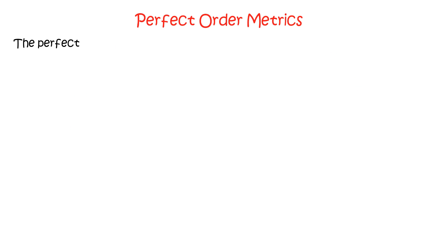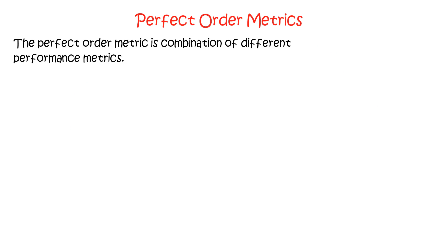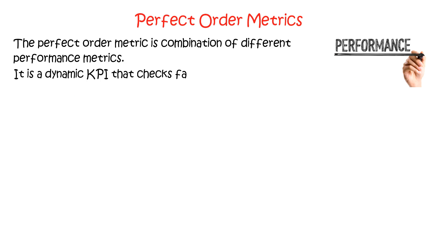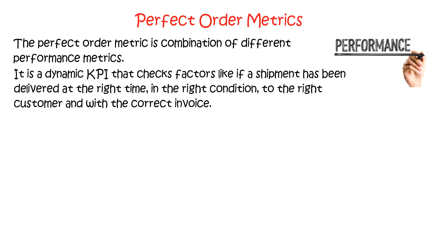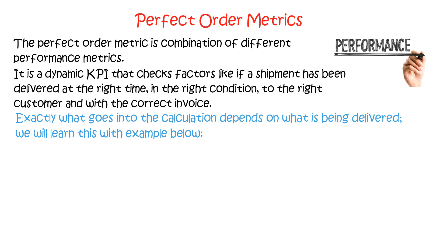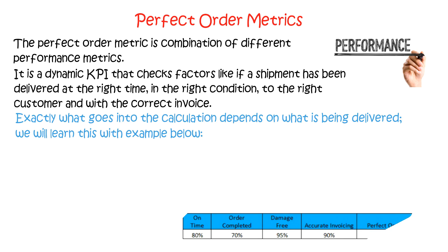Perfect order matrix is a combination of different performance metrics. It is a dynamic KPI that checks factors like if a shipment has been delivered at the right time, in the right condition, to the right customer, and with the correct invoice. Exactly what goes into the calculation depends on what is being delivered. We will learn this with the example given below.